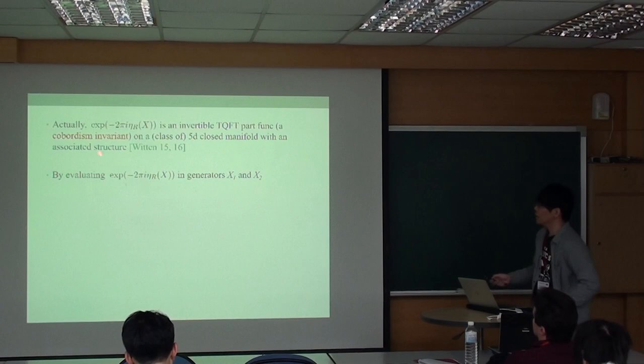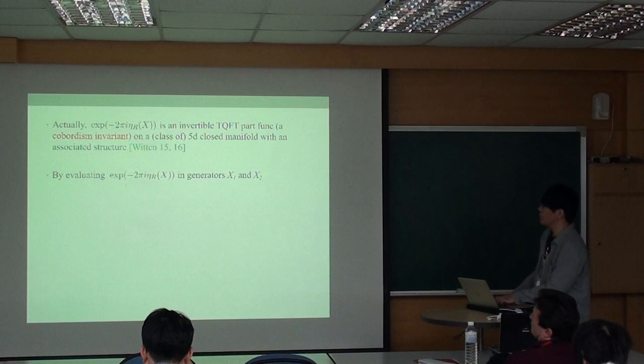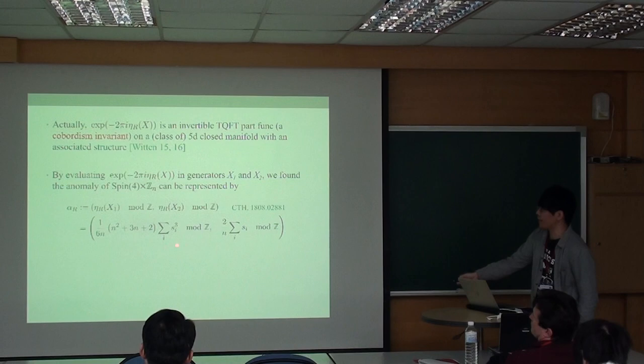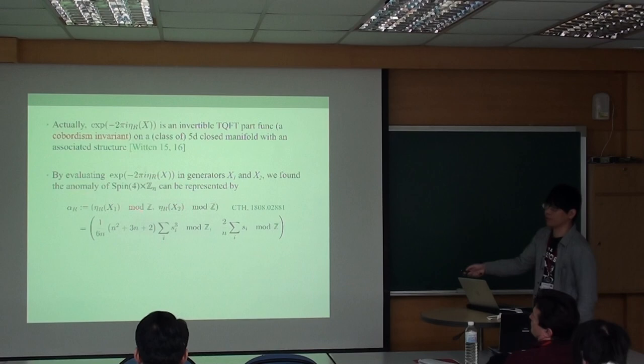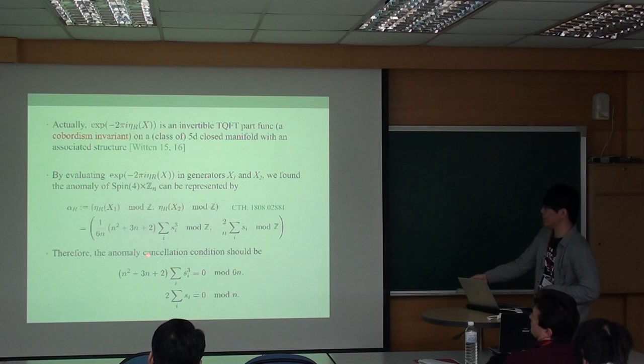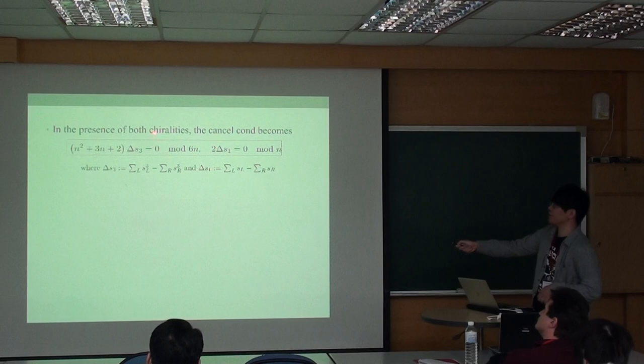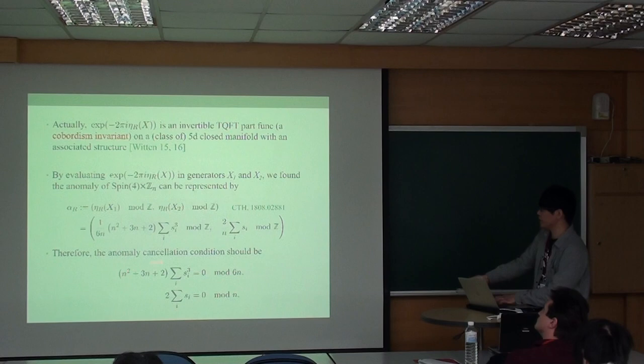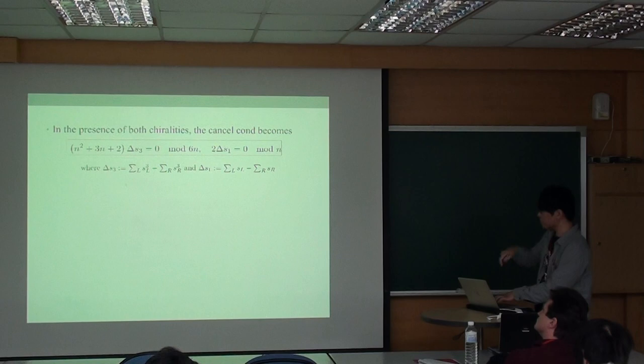By evaluating the exponential eta invariant of X1 and X2, we found that the anomaly can be represented by these two factors. I will not discuss the detail of the computation, but you can see my paper. Note that the second term is just the mixed anomaly between ZN and Spin(4). Therefore, the anomaly cancellation condition should be alpha equals zero, or mod N, which gives these two equations. In the presence of both chiralities, the cancellation condition becomes this one, but just replace the ZN charge with left minus right contributions.